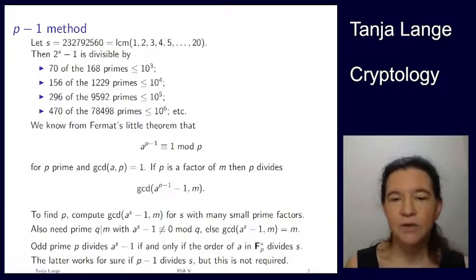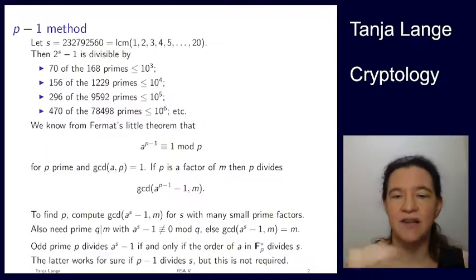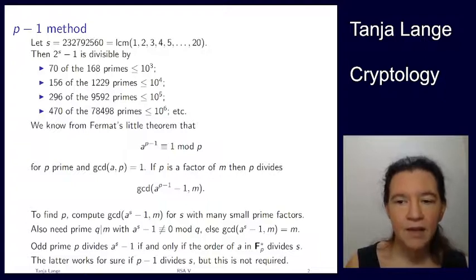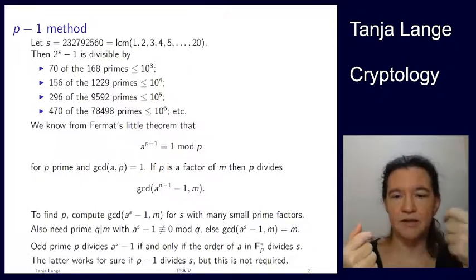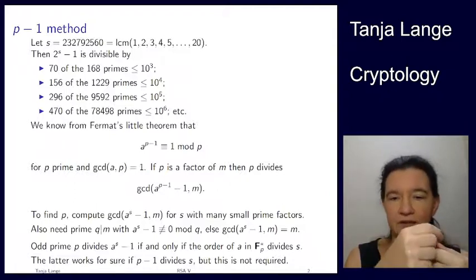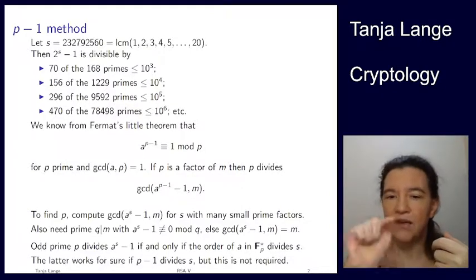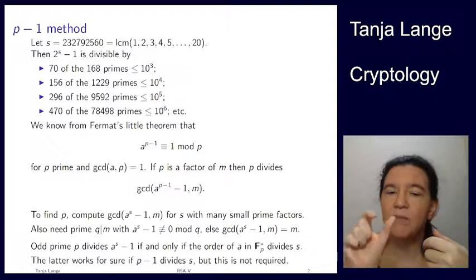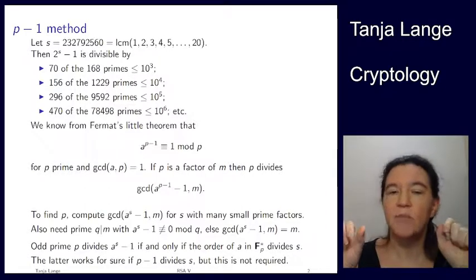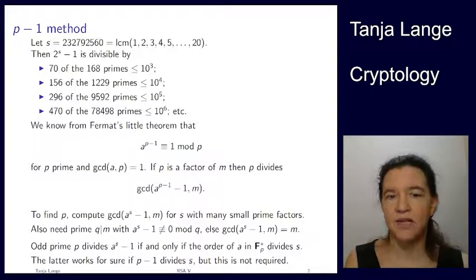An odd prime p divides a to the s minus 1 if and only if the order of a taken mod p is a divisor of s. This is guaranteed to work if p minus 1 divides s, but that's not a requirement. The p-1 method says: if p minus 1 divides s, it works — that implication is correct. But for an if-and-only-if, you really have to use the order of a mod p. It works if the order of a mod p divides s. The order of a divides p minus 1, since p minus 1 is the order of F_p star. So: order of a mod p divides p minus 1, and p minus 1 divides s, hence the order divides s. But we don't need the middle step — we can just have the order of a mod p divide s directly. That's when the p-1 method succeeds.